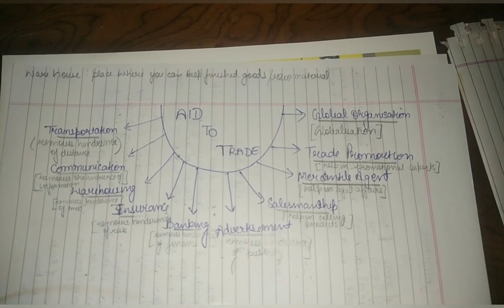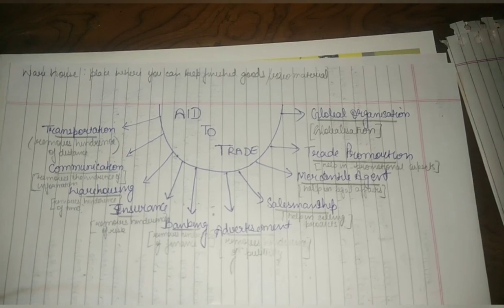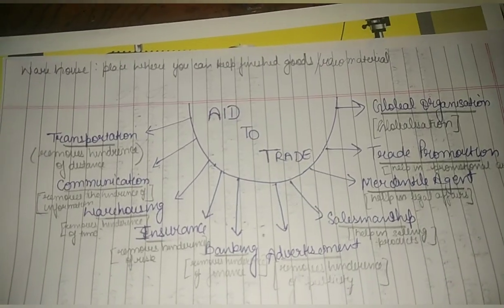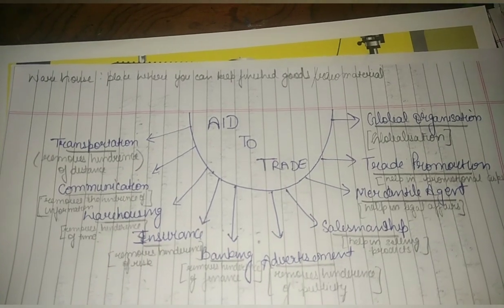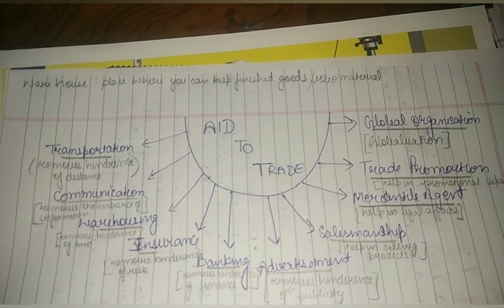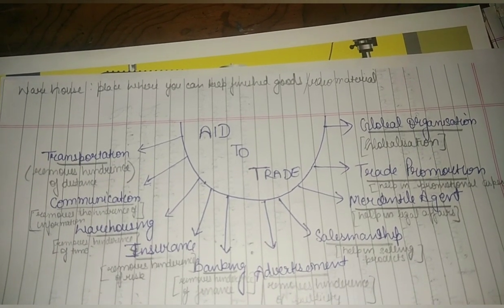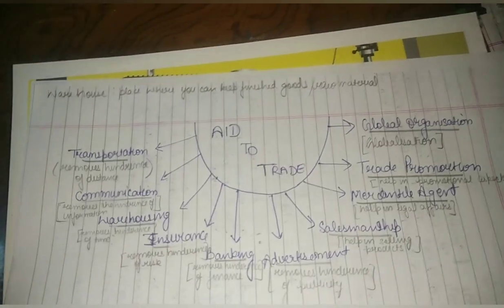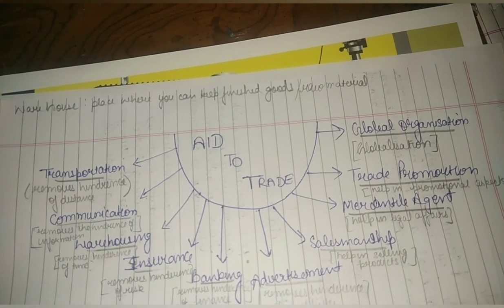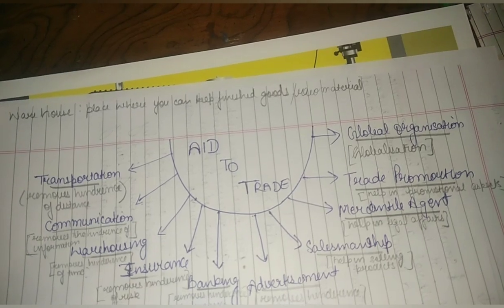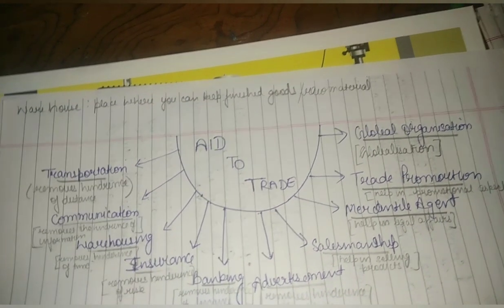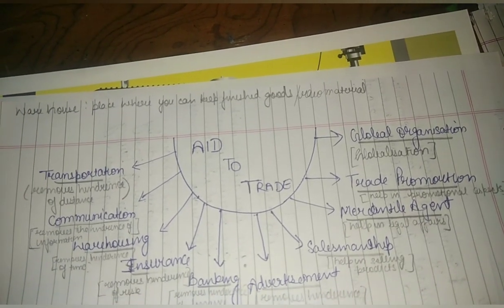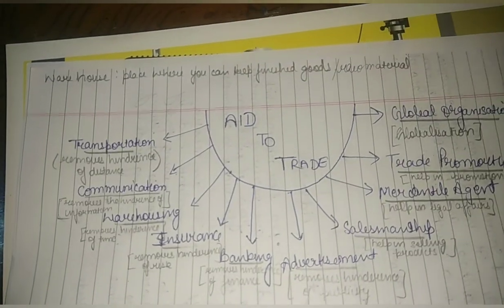Now warehousing. First we need to know what warehouse means. Warehousing removes the hindrance of time. Warehousing actually means a place where you can keep finished goods or raw materials. When you have produced finished goods, you can keep them there even if you don't have customers right away. For example, if you don't have customers at a particular time, you keep the finished goods in a warehouse, and whenever your customers increase, you can sell those stored goods.